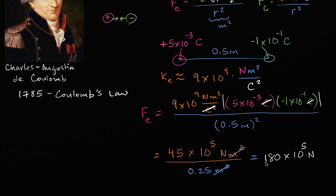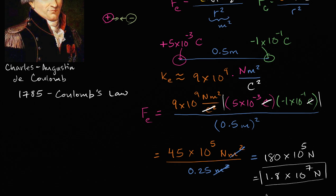Writing that in scientific notation: 1.8 times 10 to the 7th Newtons. That's the magnitude of the electrostatic force between those two particles — fairly significant, because this is actually a large amount of charge at this distance. As for direction, since the charges are different, this is an attractive force of 1.8 times 10 to the 7th Newtons acting on each of them. If they were the same charge, it would be a repulsive force.